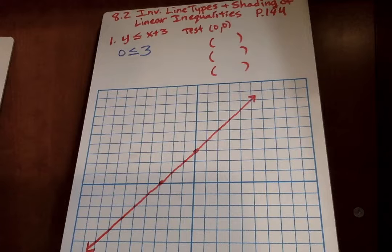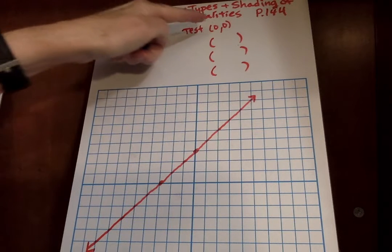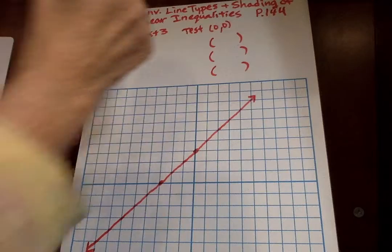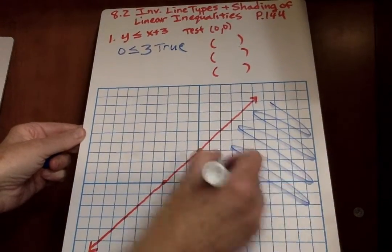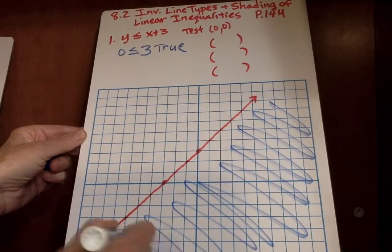Is 0 less than or equal to 3? Yes, that is true. So I tested 0, 0. It makes a true statement. So that means all this side should be shaded.